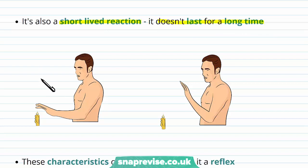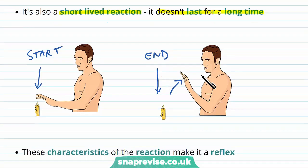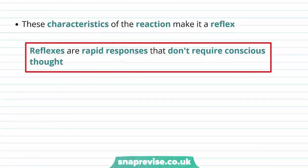The start of the reflex is where the body has realised you're near something dangerous, and then once the response has happened — within even just a second — you've moved your arm and the reflex is over. And it's these characteristics which make any reaction a reflex. So any reaction the body makes to a stimulus, if it fits these qualities, we can describe it as being a reflex.